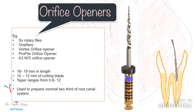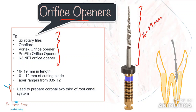Nowadays, various rotary orifice shaping files have replaced Gates Glidden drills, and there are numerous files available in the market — you can work with any that you feel comfortable with. Most orifice openers are 16-19 mm in length with a 10-12 mm cutting blade, and the taper generally ranges from 0.08 to 0.12. These are used only to prepare the coronal third of the root canal system. When using these files, if the canal is wide open and easily negotiable, it is acceptable to place a rotary orifice opener directly into the canal.